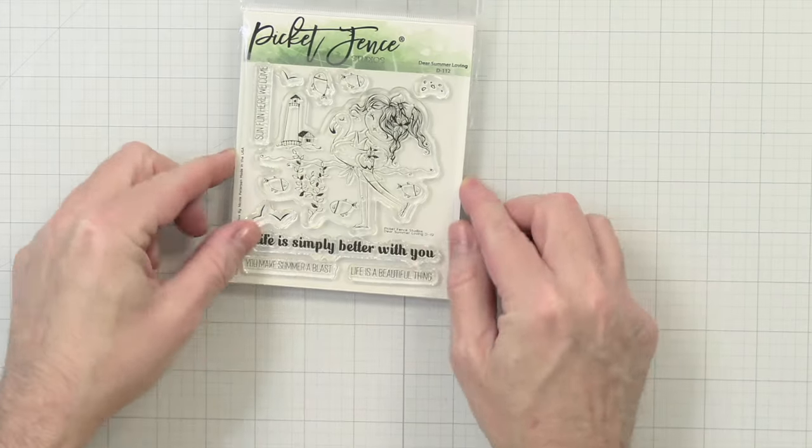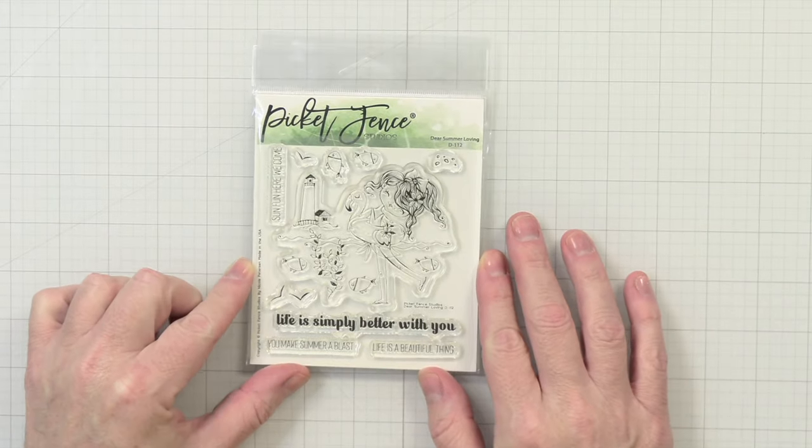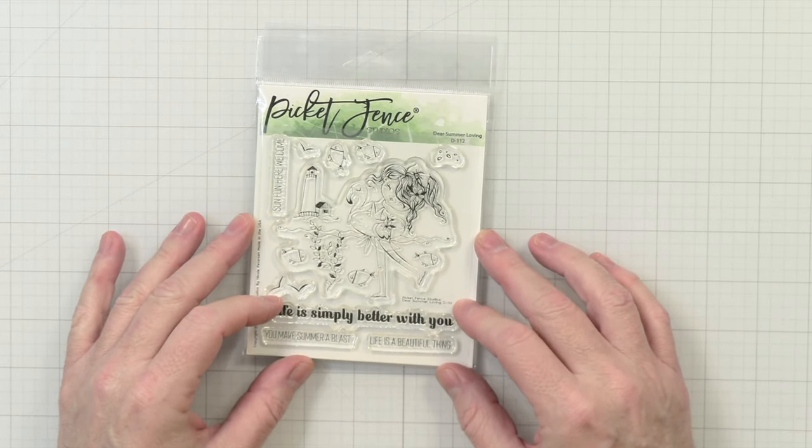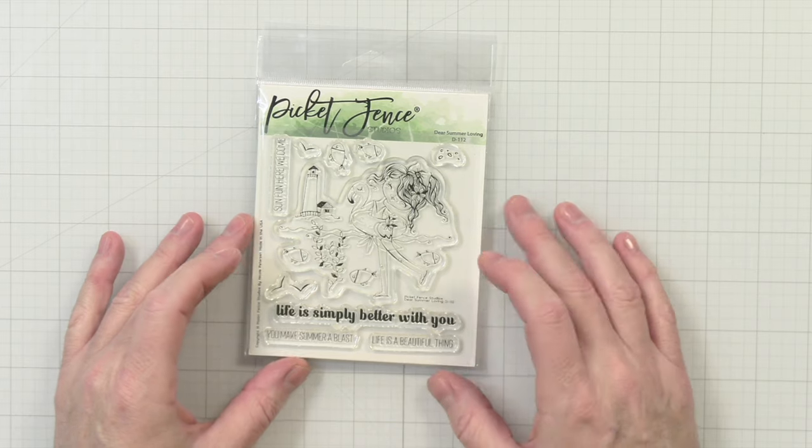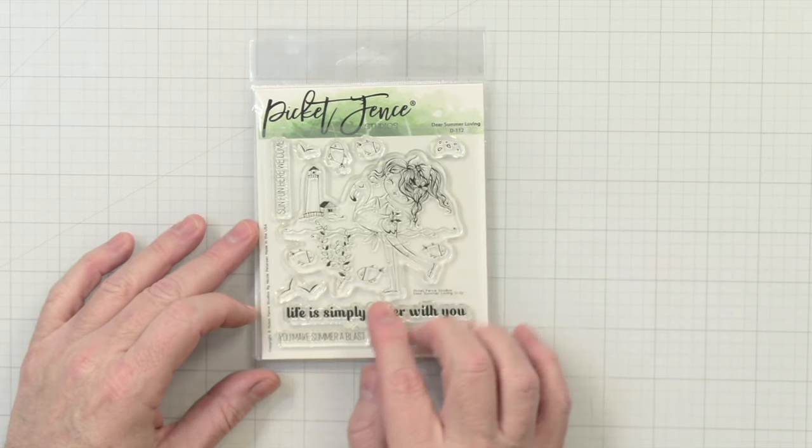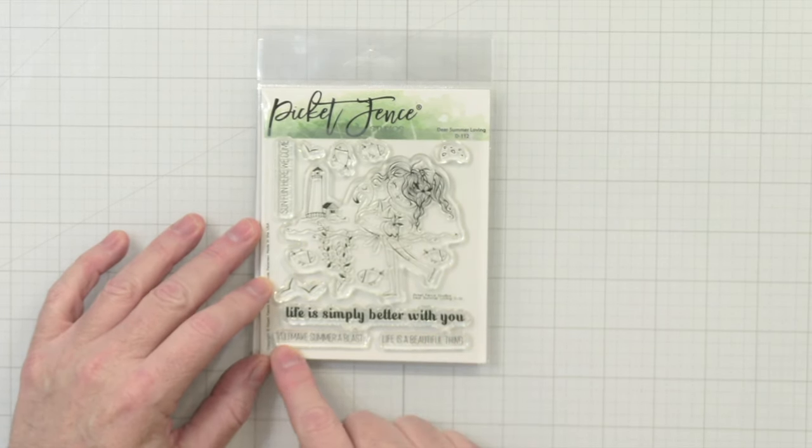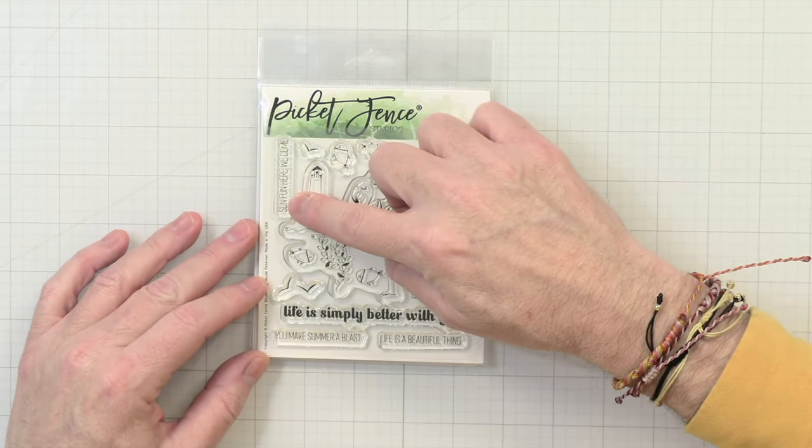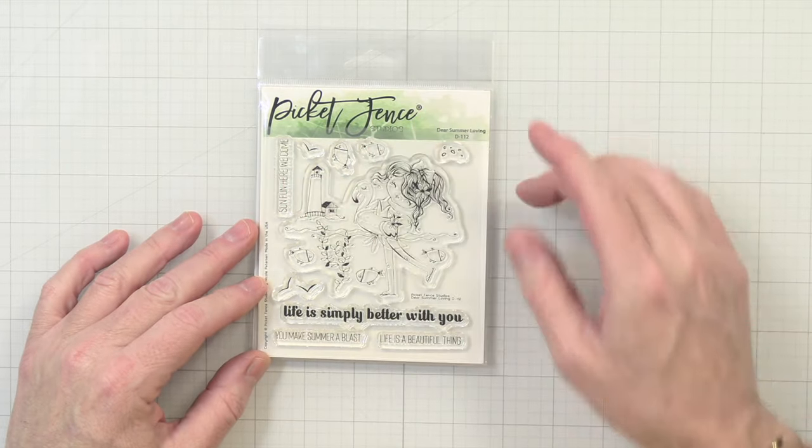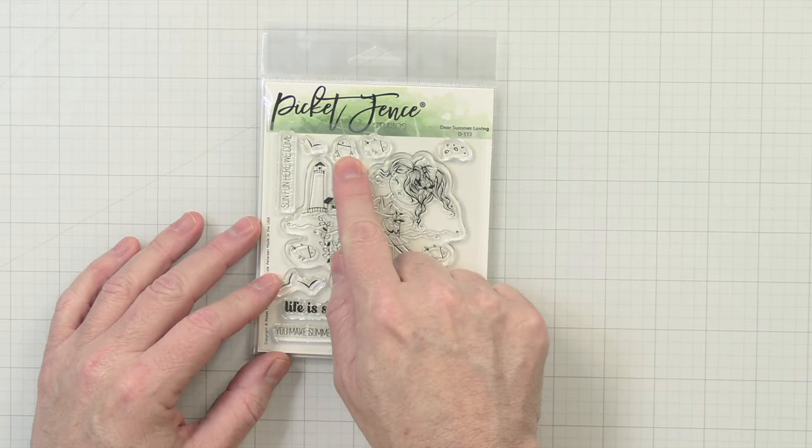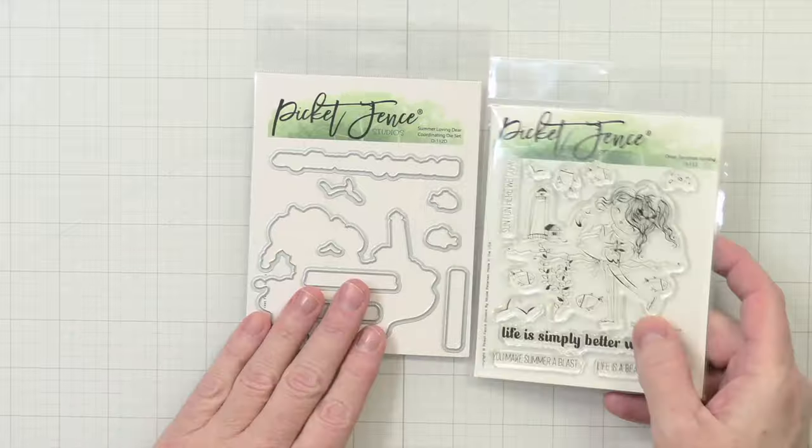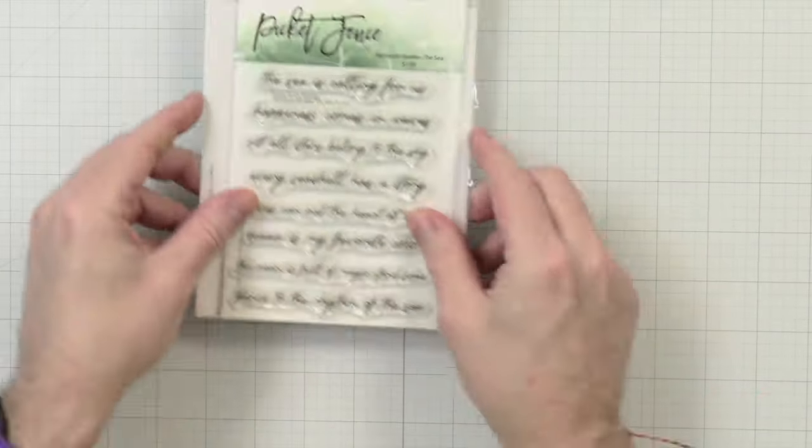Okay, so the first thing we have is this adorable little stamp set of this little girl with a little flamingo floaty. It's so cute. It's called Dear Summer Loving, really cute, has some nice sentiments. Life is simply better with you, you make summer a blast, life is a beautiful thing, and sun fun here we come. Really cute with the little fishies and the rocks and stuff. Adorable. And it does come with some coordinating dies.